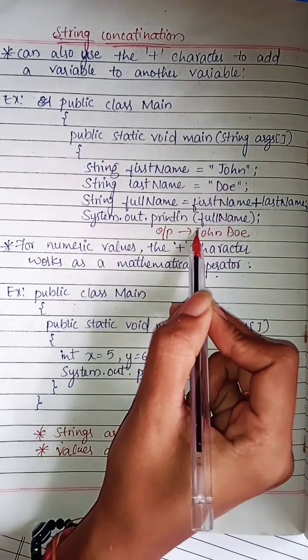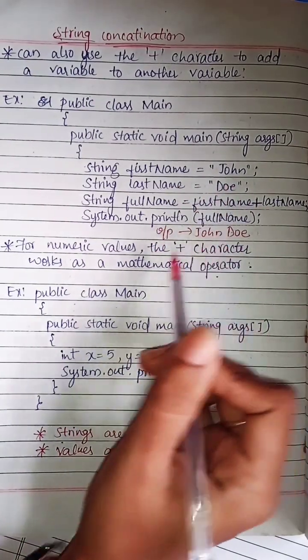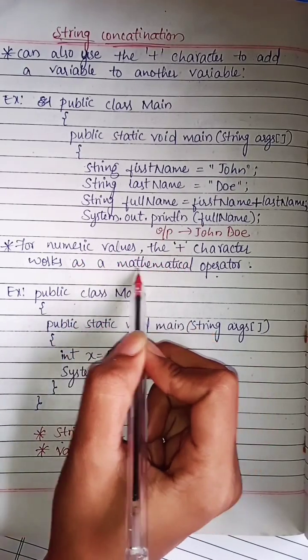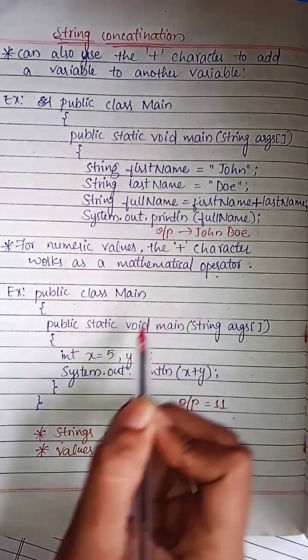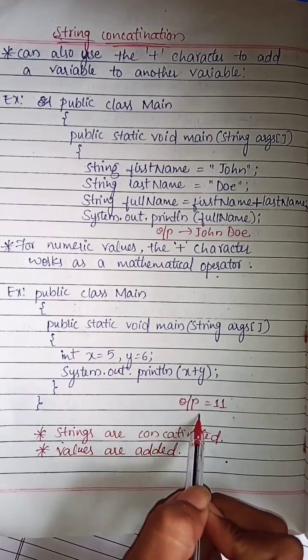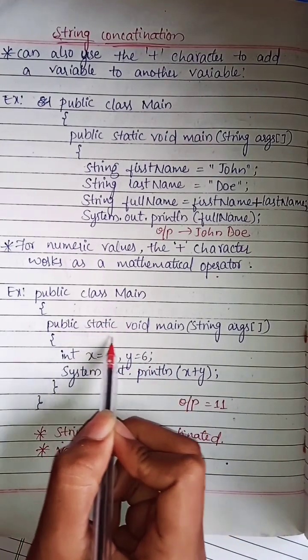a combination of firstName and lastName. It will print John Doe. For numeric values, plus acts as a mathematical operator. For example, x is 5, y is 6, x plus y outputs 11.